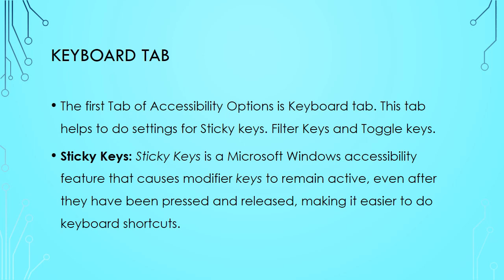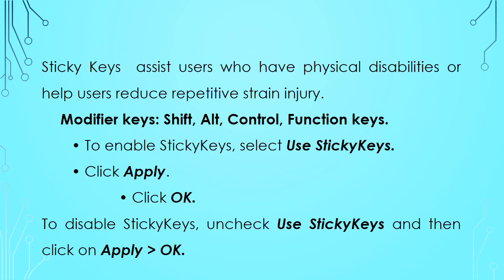Sticky Keys is a Microsoft Windows accessibility feature that causes modifier keys to remain active even after they have been pressed and released, making it easier to do keyboard shortcuts. Sticky Keys assists users who have physical disabilities or helps users reduce repetitive strain injury. The modifier keys are Shift, Alt, and Control. To enable Sticky Keys, open Accessibility Options, click on the Keyboard tab, and select the 'Use Sticky Keys' checkbox, then click Apply and OK. To disable, uncheck 'Use Sticky Keys' and click Apply and OK.